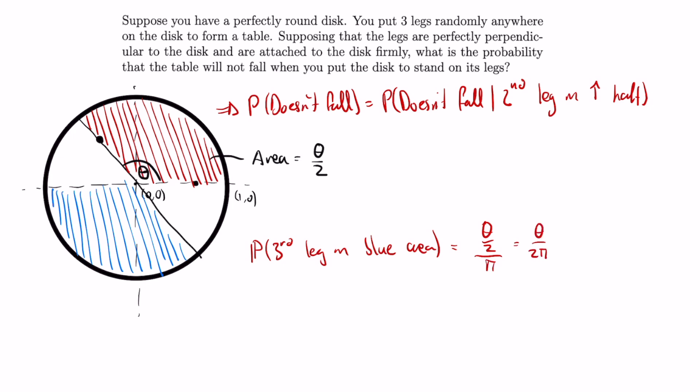We now want to integrate over all the possible locations of the second leg in the upper half disc to get the aggregate probability. Since the area of the upper half disc is π/2, the conditional distribution of the second leg on this upper half circle is 1 over π/2, which is just 2/π.